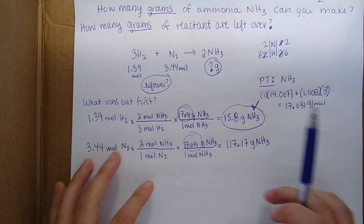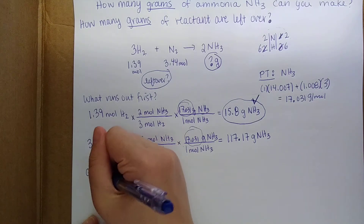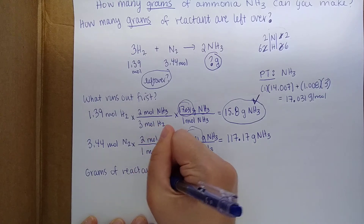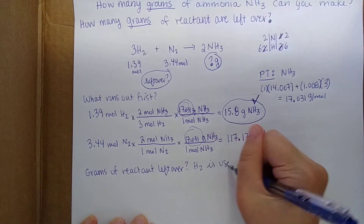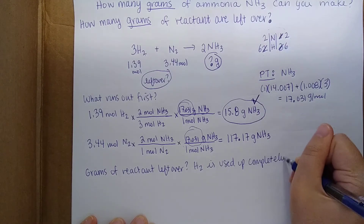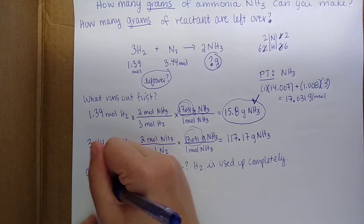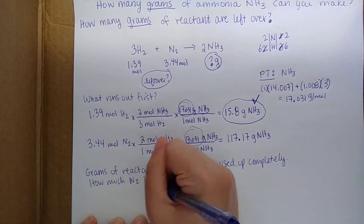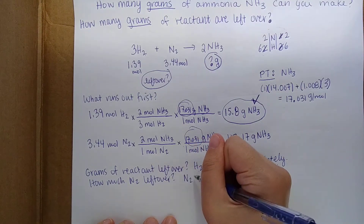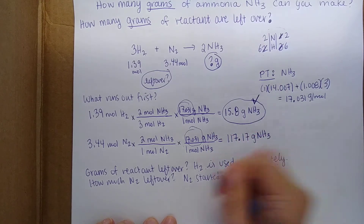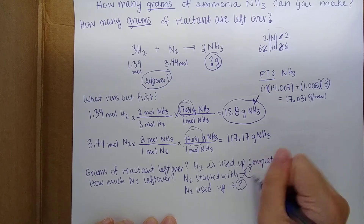The next thing it's asking is how many grams of reactant are left over. Since H2 is our limiting reactant, it is used up completely — we won't have any excess H2. So what it's really asking is how much N2 is left over. To answer this, we need to figure out how much N2 we started with and how much N2 was used up, then subtract.